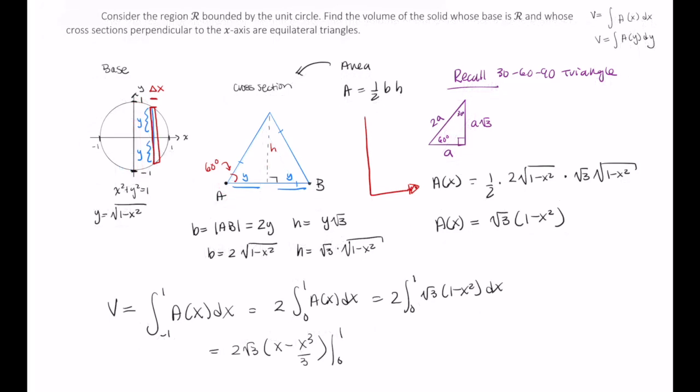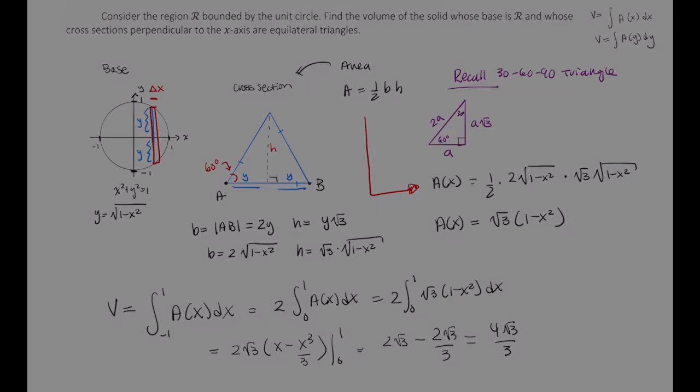So you end up with 2 root 3 times this entire quantity x minus x cubed over 3, evaluated from 0 to 1. This gives us 2 root 3 minus 2 root 3 over 3, which simplifies to 4 root 3 over 3. I hope this video was helpful. We'll see you next time.